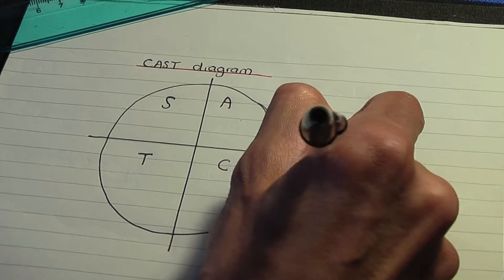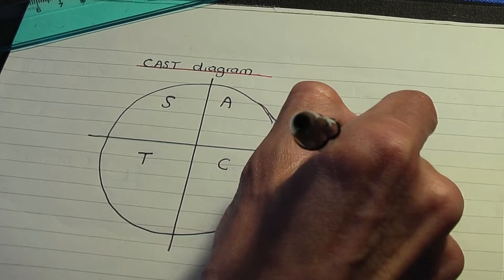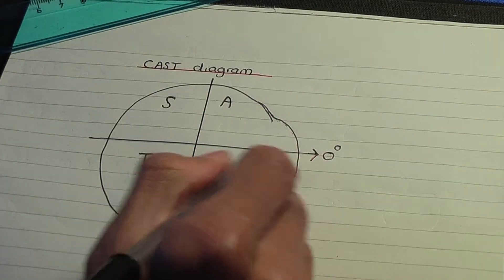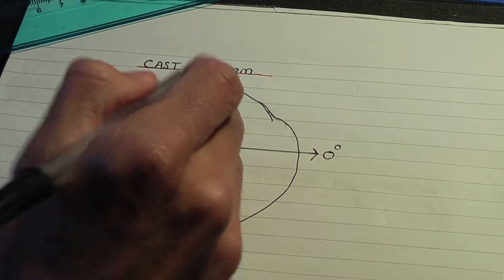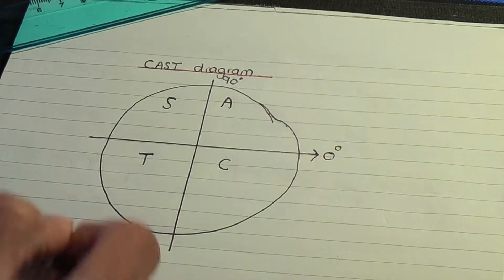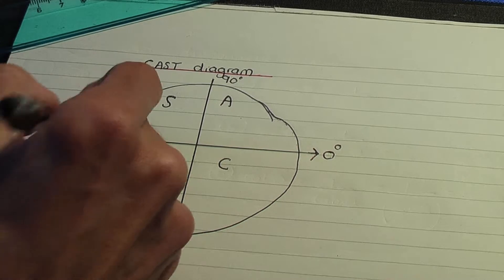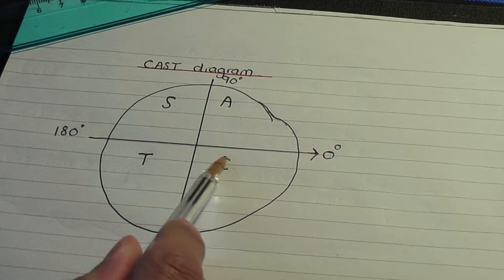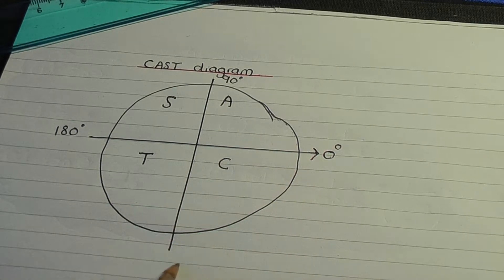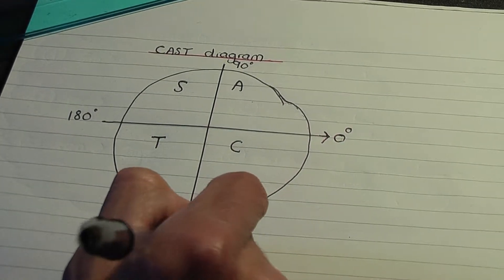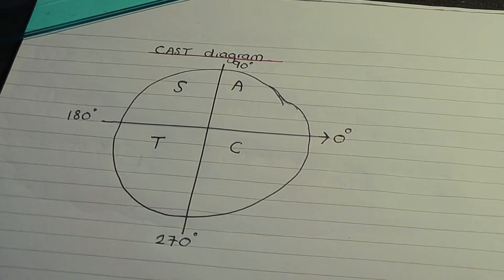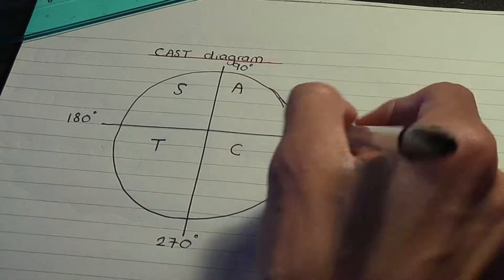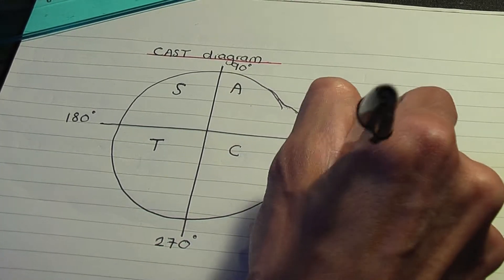This line over here is the line representing zero degrees on our CAST diagram. From this line to this line here represents 90 degrees. Going over to this line — an angle in a straight line — 180 degrees. From the zero degree line to this line here represents 270 degrees, and one complete revolution from the zero degree line would make this line 360 degrees.